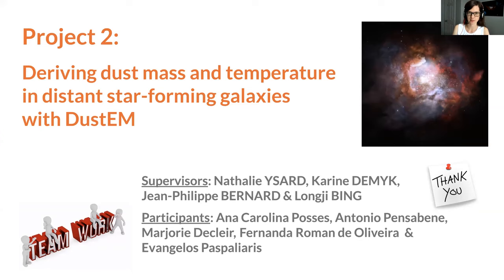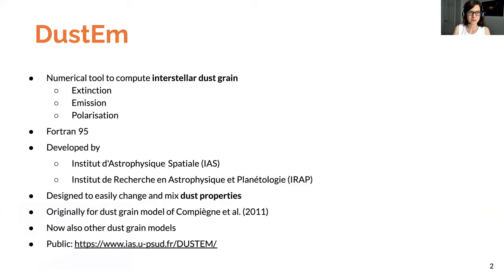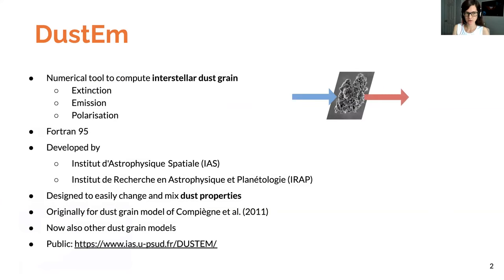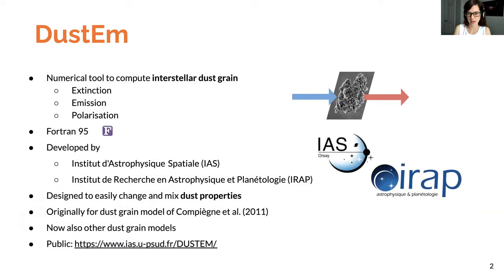I'm going to briefly introduce DustEM. DustEM is a numerical tool to compute the extinction, emission, and polarization of interstellar dust grains heated by photons. The code is written in Fortran 95 and has been developed by two French institutes: IAS and IRAB. The code is designed so that you can easily change and mix different dust properties, and it was originally developed to work with the dust grain model of Compiegne et al. 2011.